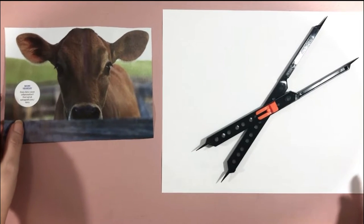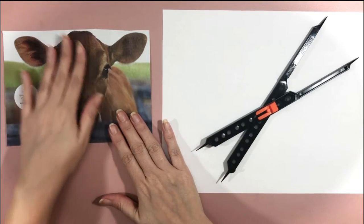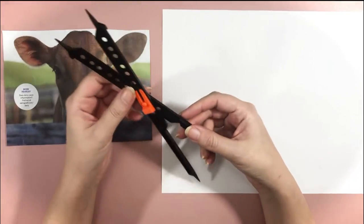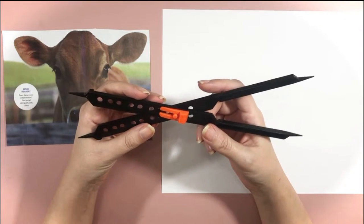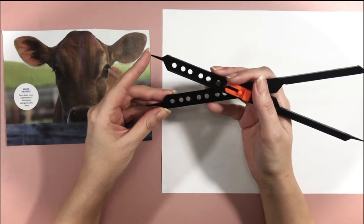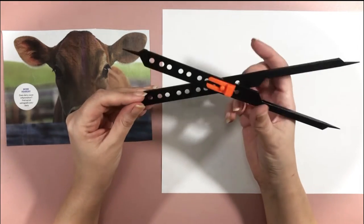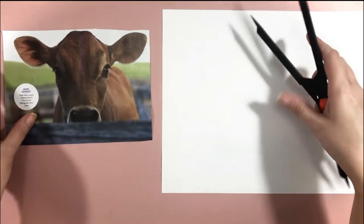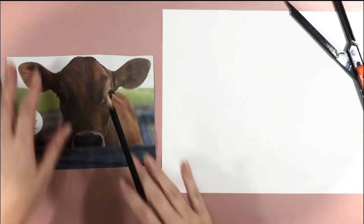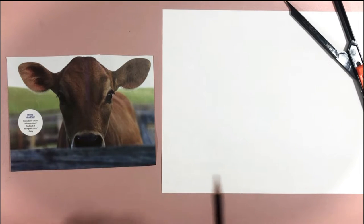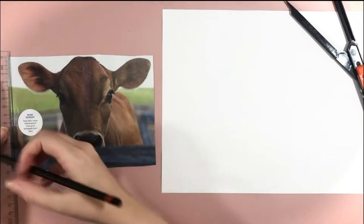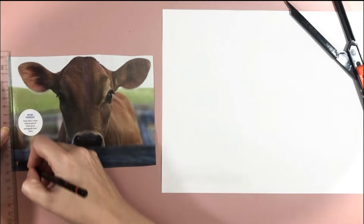Here we go — we have this cute little cow on our left as the reference photo and this is my paper. What I'm holding is a tool that helps create proportions: from a real-life object that I see from far, I can transfer it onto my paper at a much bigger scale. This photo is relatively small on purpose. Again I'm drawing lines here as a frame first, but this time I'm not measuring the centimeters — I don't care how many it is.